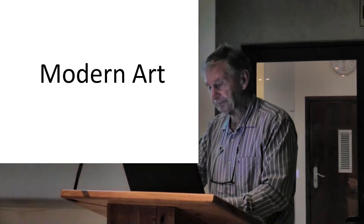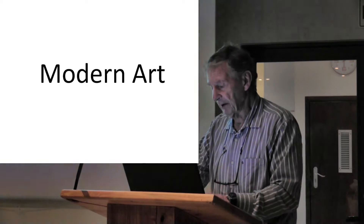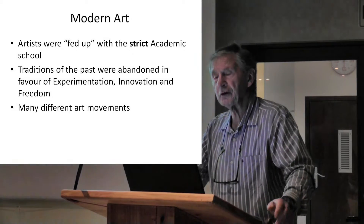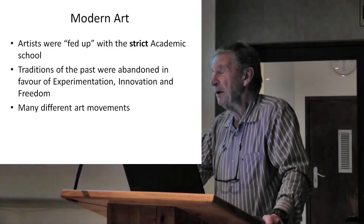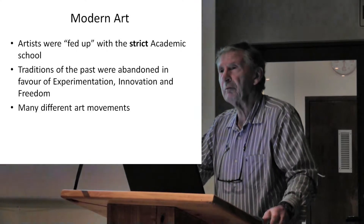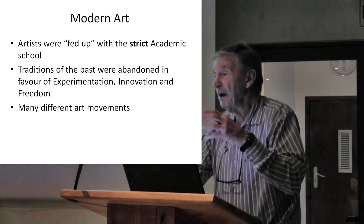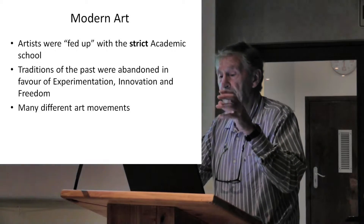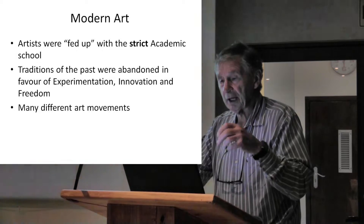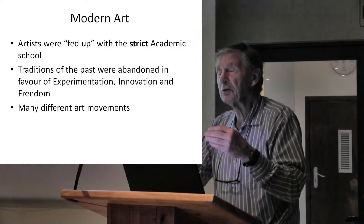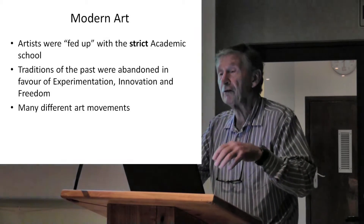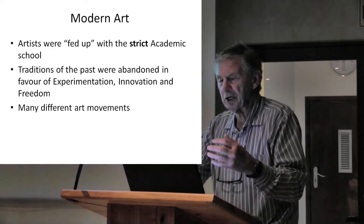Then what happened? Modern art came about. The artists were basically fed up with the strict academic school. Originally I thought it was to do with photography — that now they didn't have to have a portrait painted because they could just take a picture. But in actual fact, that wasn't the case. It was the strict academic school which upset these guys. They abandoned the traditions of the past in favour of experimentation. Experimentation was everything — innovation, freedom.